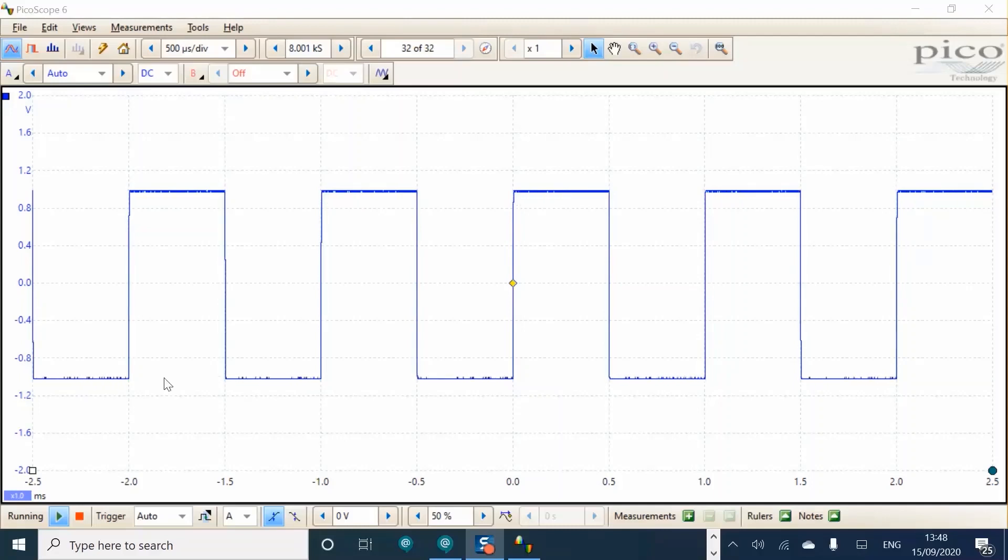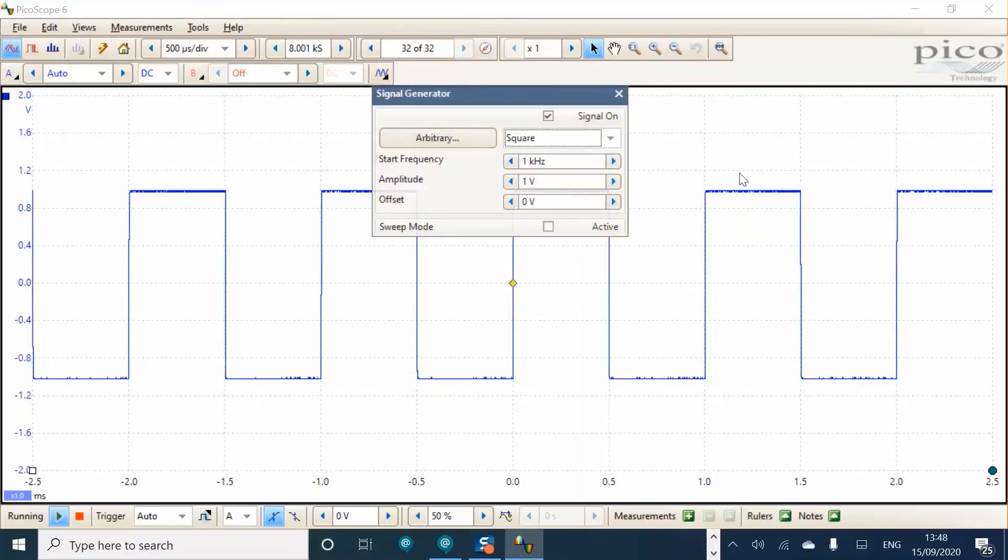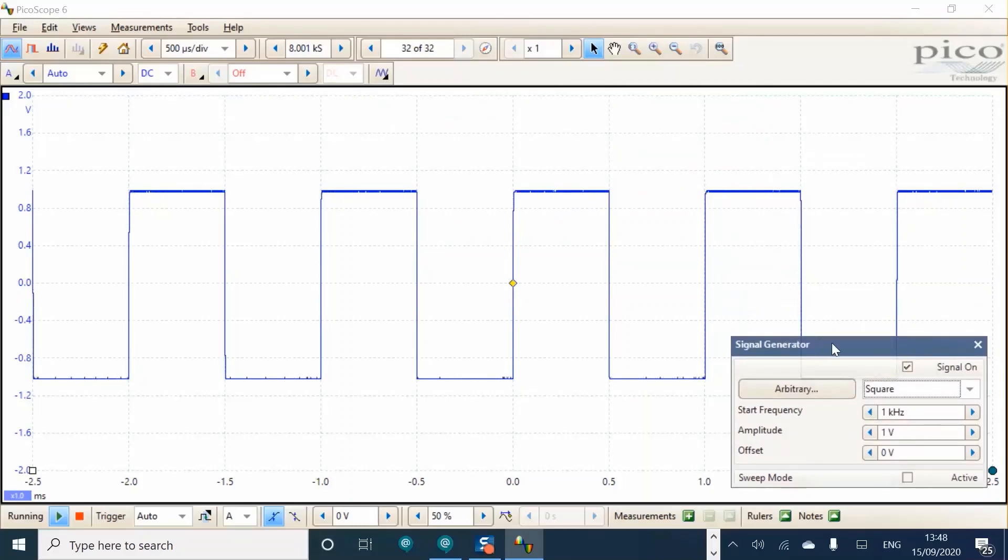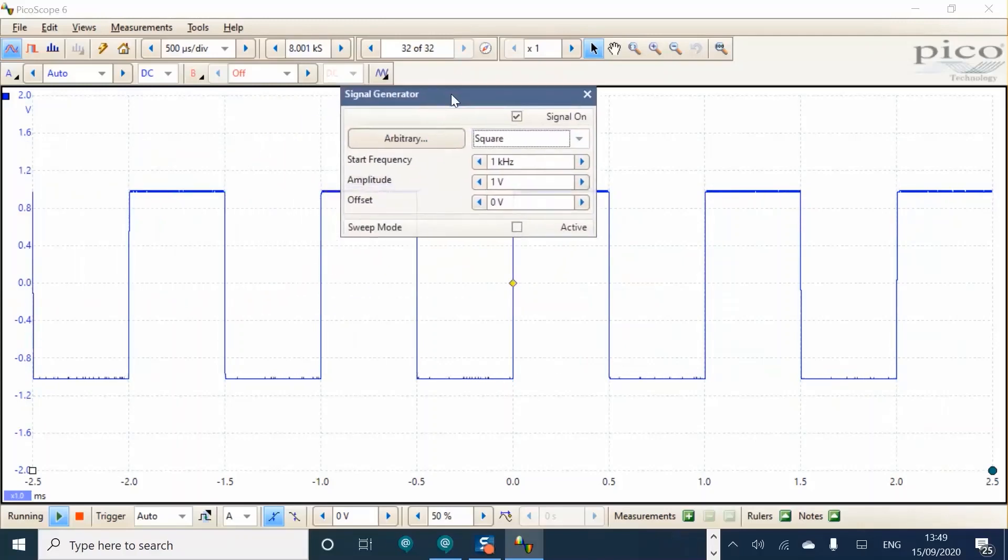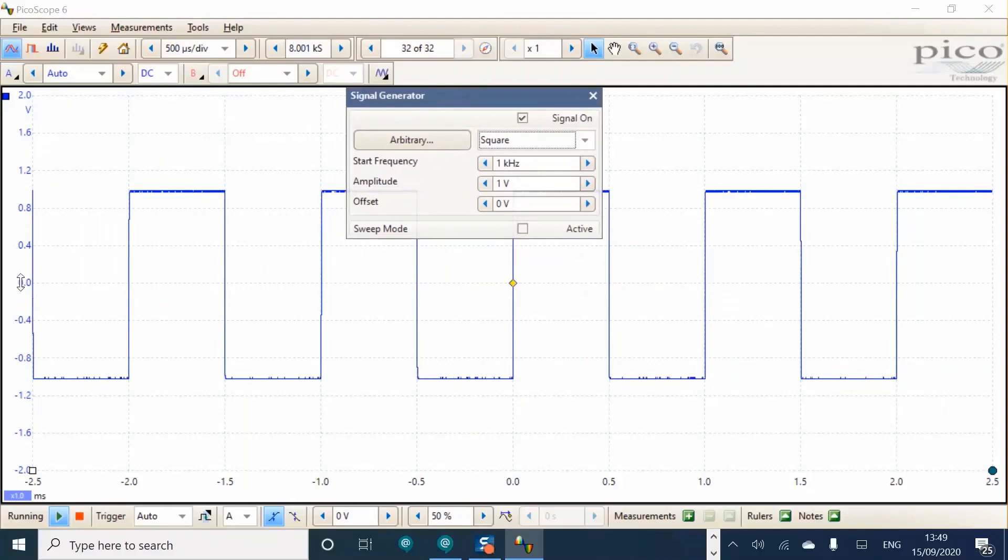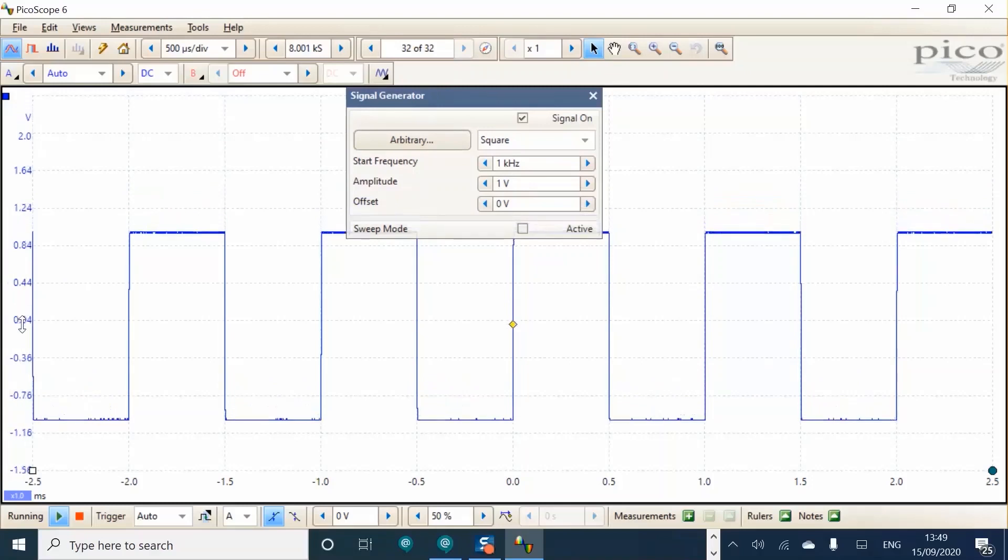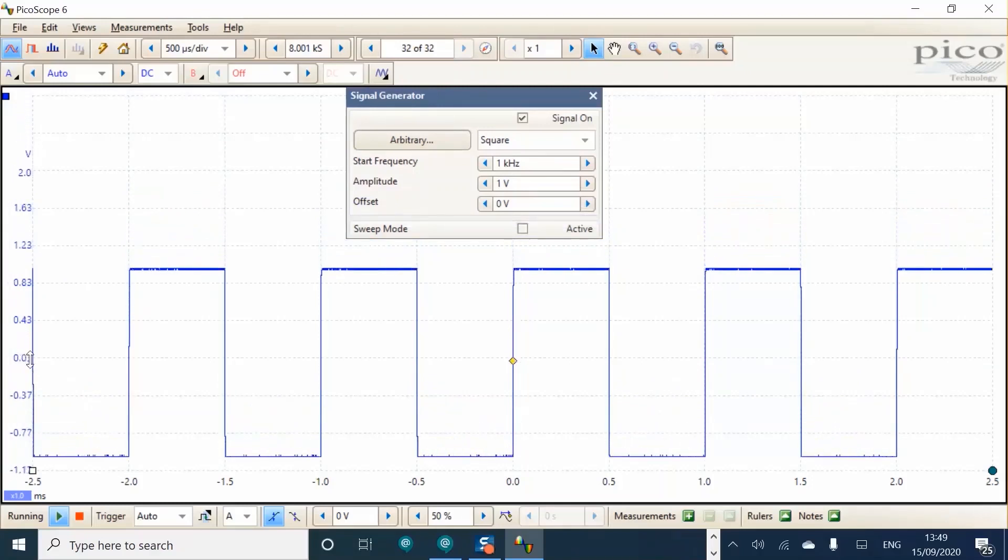Let's open the generator menu and take a look at the various controls. If you find the menu covers part of the signal you're interested in, you can drag the menu to another part of the display or even off the screen onto a second display to give you full visibility of the waveform. In this case, I'm going to leave it in the centre and actually move the waveform down two divisions by dragging the scale and allowing it to snap to the graticule.